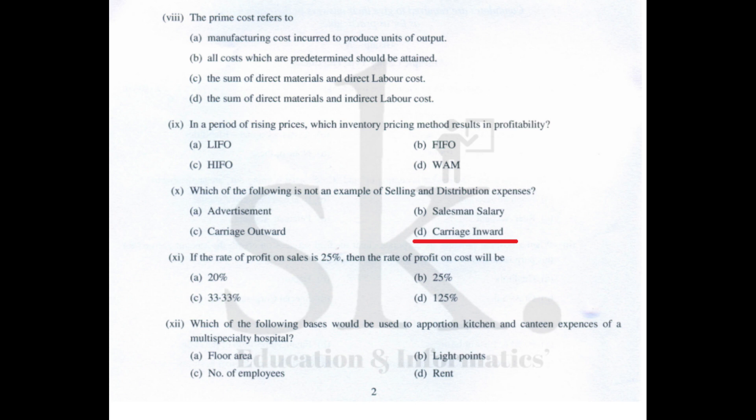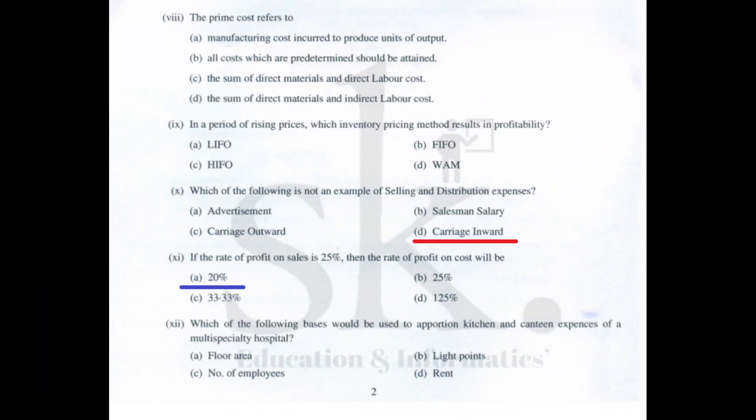Question number eleven: if the rate of profit on sales is 25%, then the rate of profit on cost will be — if sales is 125, profit is 25, so cost is 100. Profit on cost = 25/100 = 20%. Alternatively: 25/125 × 100 = 20%. The correct option is A, 20%.